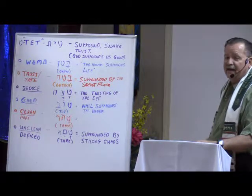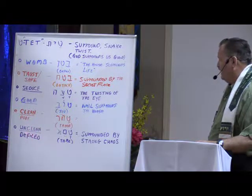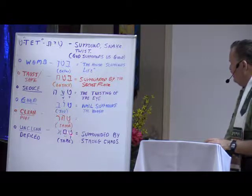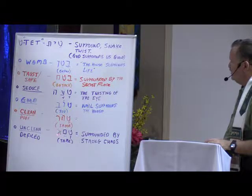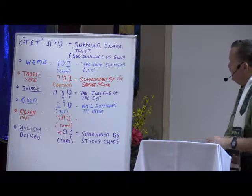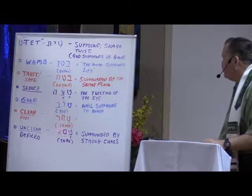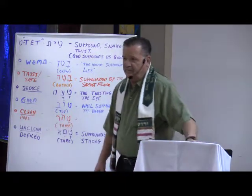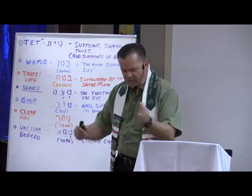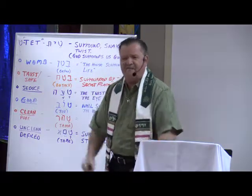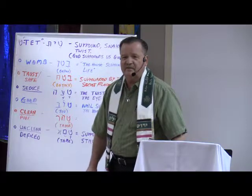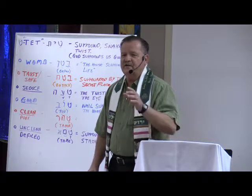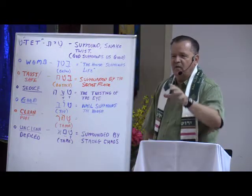The reverse of purity and being clean would be uncleanness or defilement. Let's take a look at the Hebrew letters that make up 'defiled' or 'unclean.' We have the tet for surround, mem for chaos, and then aleph — the word picture here is an ox, which means strong. So to be surrounded by strong chaos will cause you to be unclean and defiled. We hear the idea in churches today that we want revival and the power of God, but at home we hold hands with the devil.